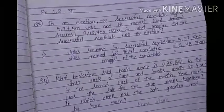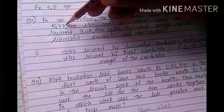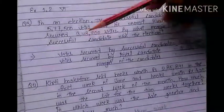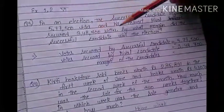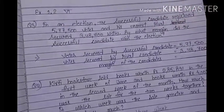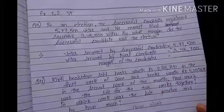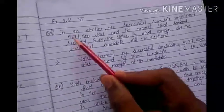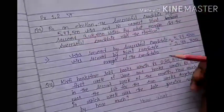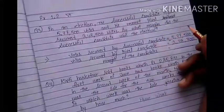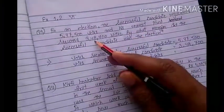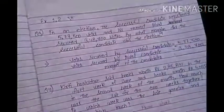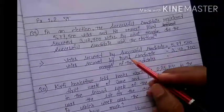Now coming to question number 3. In an election, the successful candidate registered 5,77,500 votes and his nearest rival secured 3,48,700 votes. By what margin did the successful candidate win the election? One who wins the election got 5,77,500 and the rival got 3,48,700. We are asked how many votes — what margin, meaning the difference.